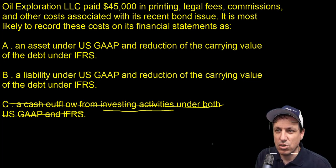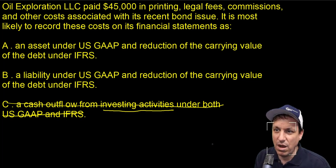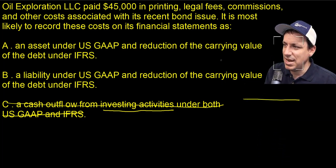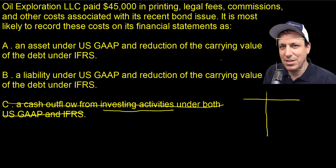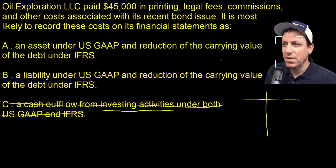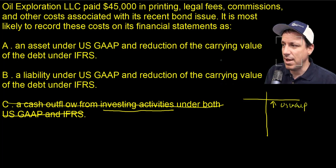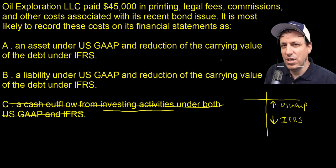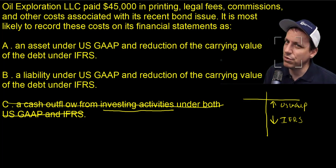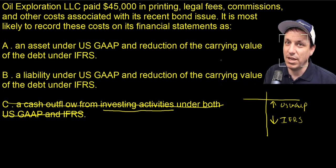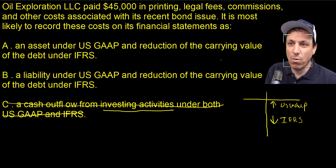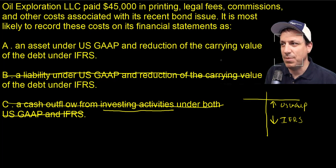Let's go to B. It says a liability is recorded under US GAAP and a reduction of the carrying value of debt under IFRS. So it's saying US GAAP and IFRS do two different things — in fact, the exact opposite things. Under B, we'd record the amount as a liability increasing our liabilities under US GAAP, while IFRS says we reduce liabilities. IFRS and US GAAP do butt heads occasionally, but they don't disagree this drastically — one being a liability and the other the complete opposite. So by that principle, B is probably not the answer.